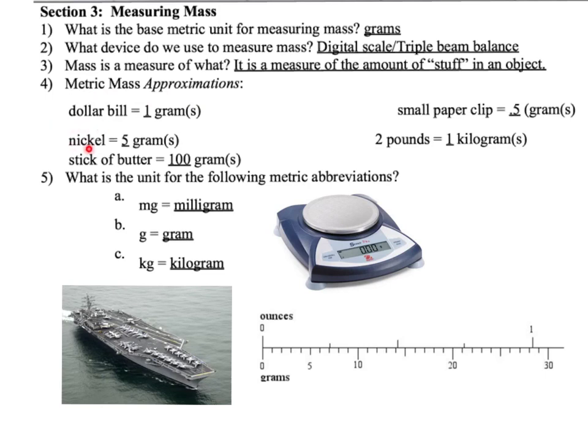One gram would equal a one dollar bill. A nickel is five grams. One stick of butter equals 100 grams. A small paper clip is a half a gram. And two pounds equals about one kilogram. Also down here, you'll see a comparison between ounces and grams. So in one ounce, we have approximately 28.5 grams.